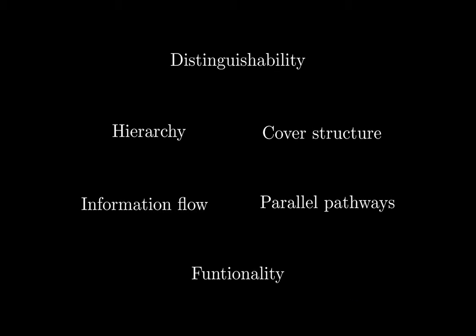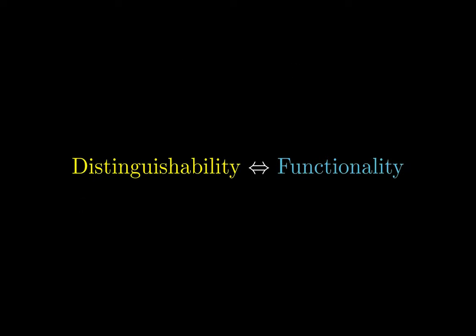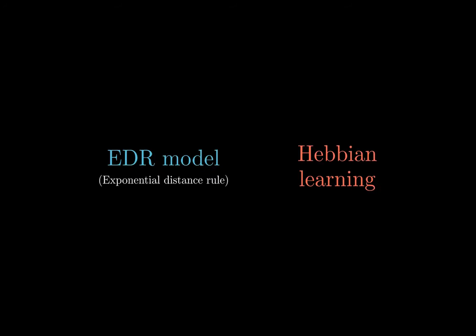Since the core of these structures is the similarity of cortical connectivities, we claim that cortical area distinguishability is associated with communities, which turns out to be related to information flow and functionality. But the question is, why? We suggest that the connection between these two features is partially explained by the EDR model and Hebbian learning.